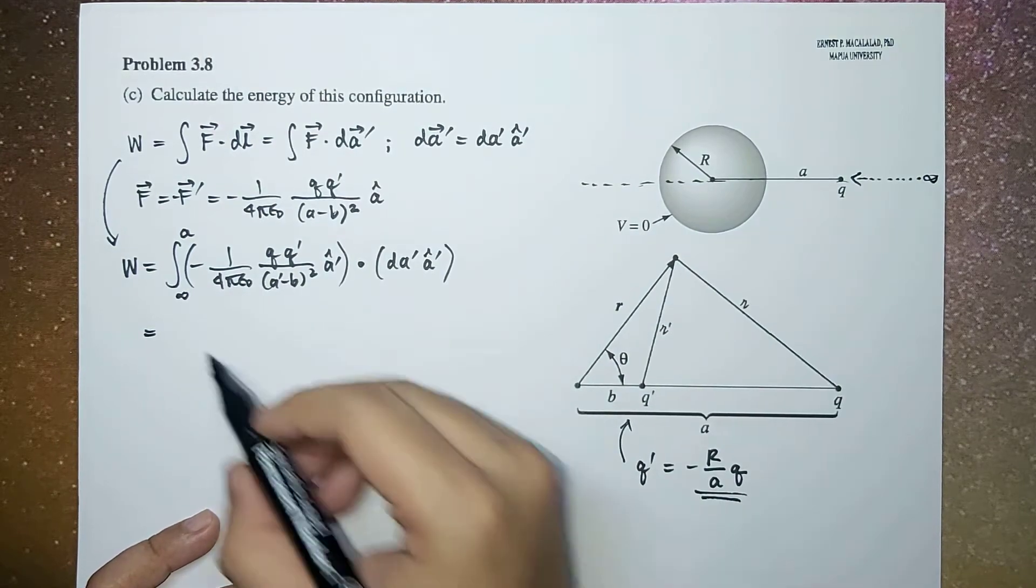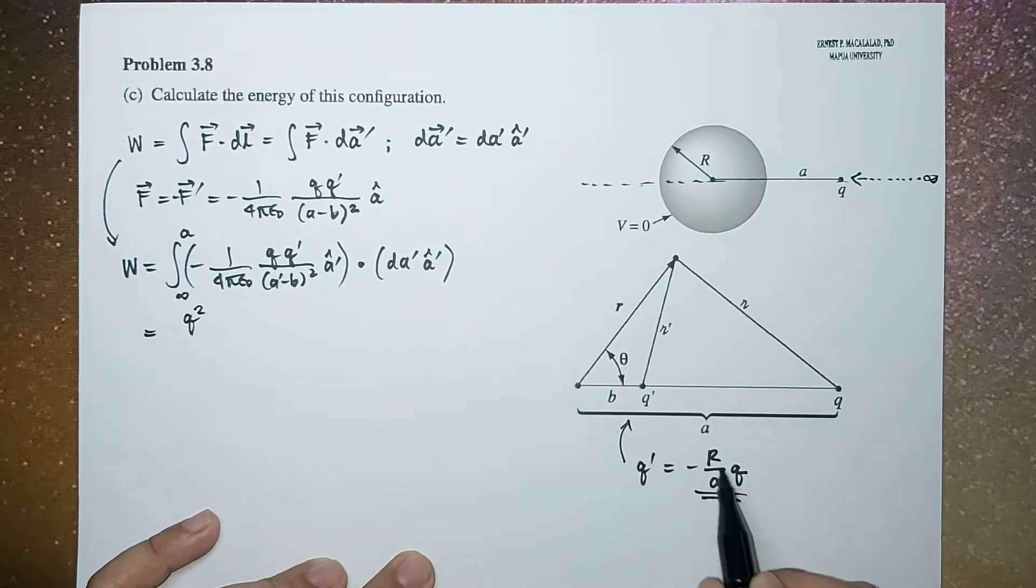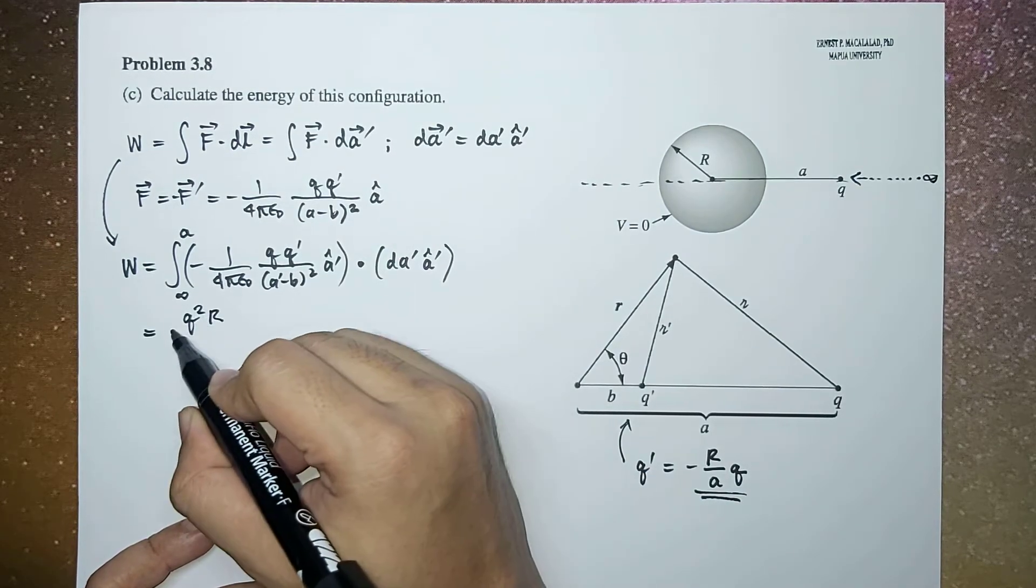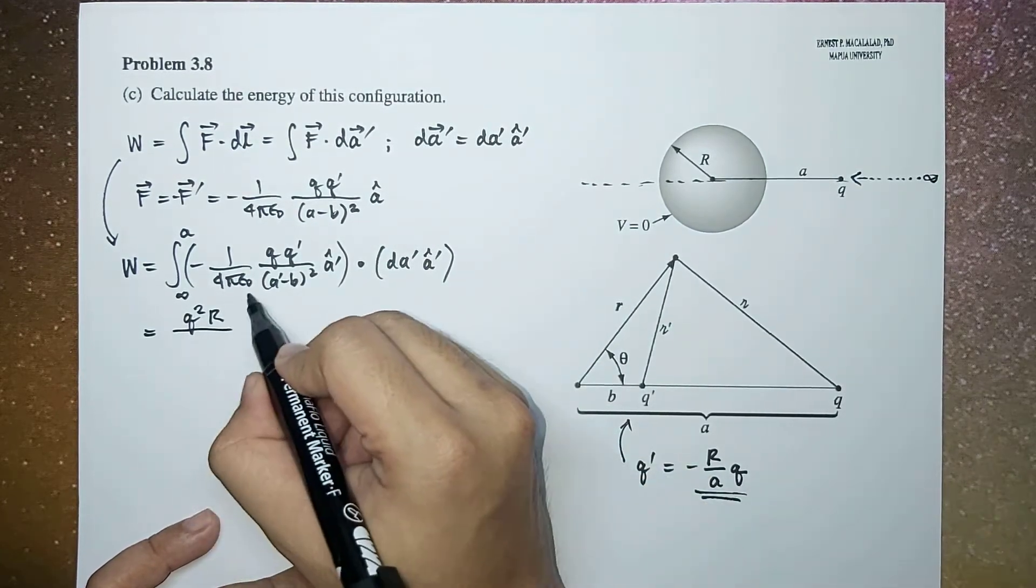So q prime is negative r over a times q, so this becomes q squared r squared times r divided by 4 pi epsilon naught.